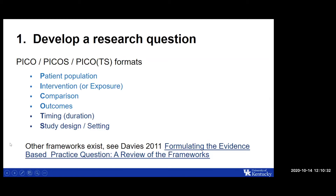The first step in the systematic review process is to develop a focused, well-defined research question. PICO is the most common framework used in healthcare; however, other frameworks exist. If PICO doesn't work for your discipline, you can look for another format. The goal is a very specific and focused clinical question.